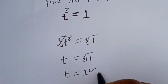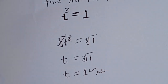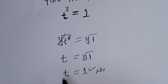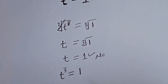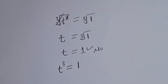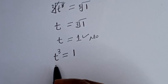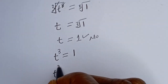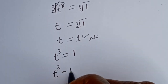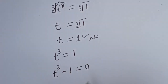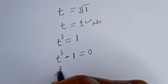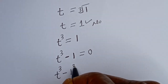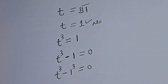In order to find all the other roots, we have t³ = 1. Let's bring this one to this side, then t³ minus 1 is equal to 0. This is also written as t³ minus 1³ equal to 0.